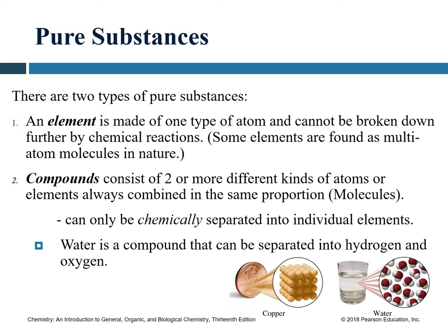A pure substance is a type of matter that has a fixed and definite composition. It always consists of the same composition — it cannot be mixed with different things. It is pure in itself. You can find a pure substance from anywhere in the world and it will always consist of the same composition.